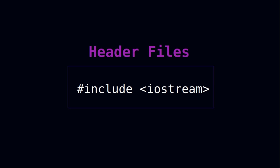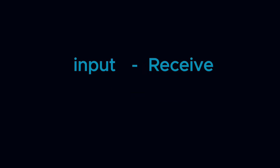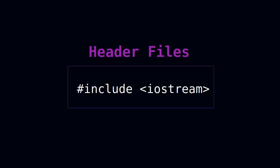The first line is hash include iostream. The iostream gives us the privilege to use input and output streams. The 'I' stands for input — for receiving information from a user or allowing a user to input information into our program — and the 'O' stands for output, meaning we want to display something on the console so the user can see it.